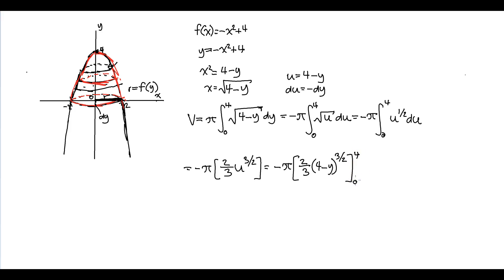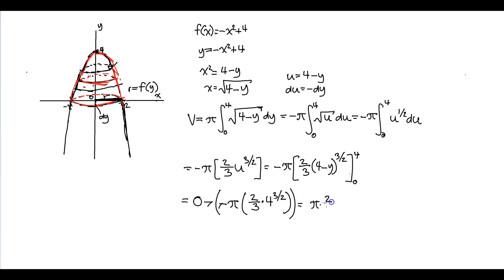We're at this step now, from 4 to 0. We use the fundamental theorem. The first limit gives 0 because y equals 4 and 4 minus 4 is 0, turning the entire expression to 0. Then minus negative π times 2/3 times 4 to the 3/2. And 4 to the 3/2 is equal to 8. So the negatives cancel, and we have π times 2/3 times 8, which is 16π over 3. That is the volume of this solid.